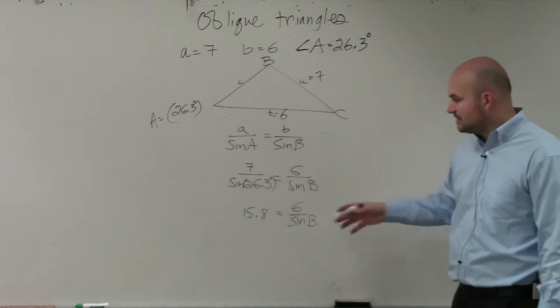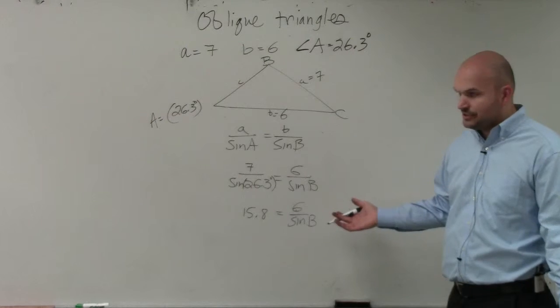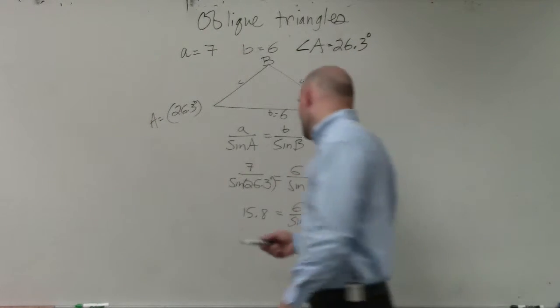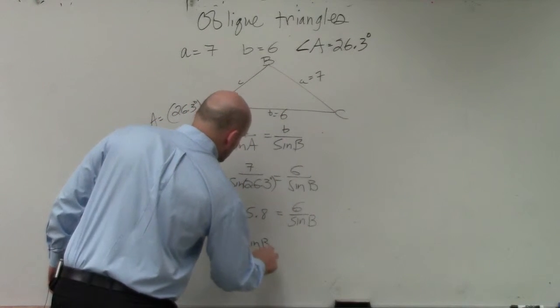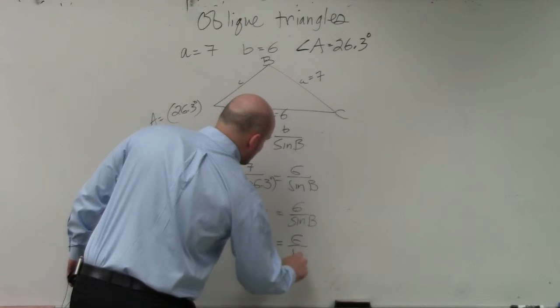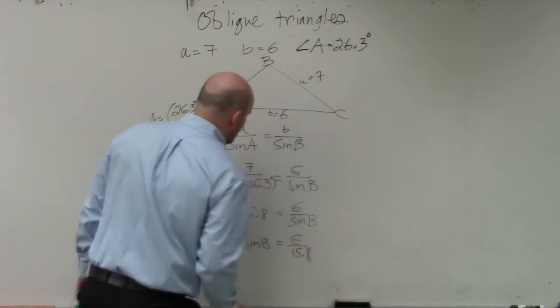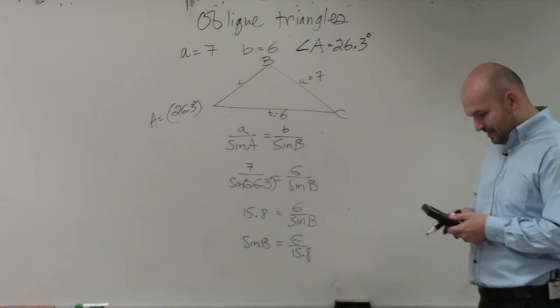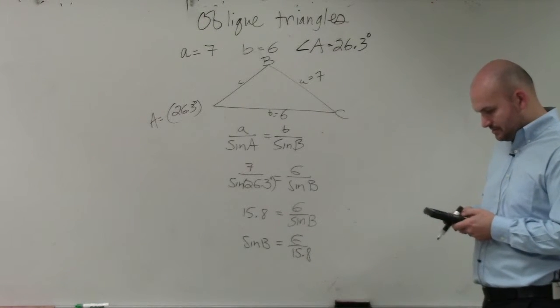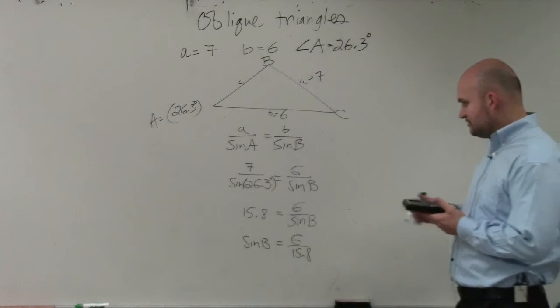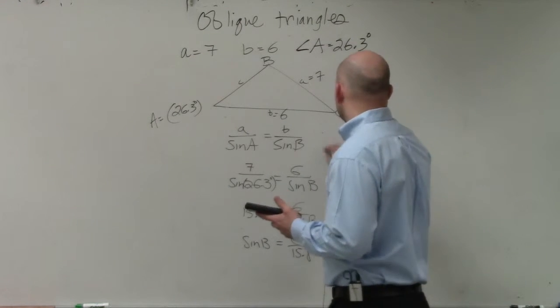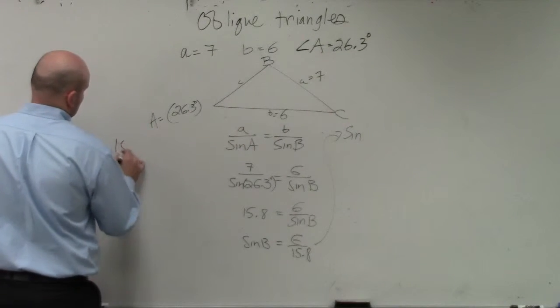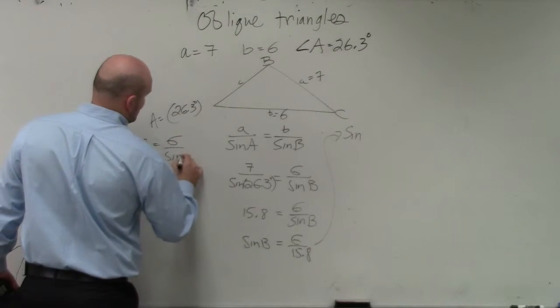Now hopefully you guys are familiar with solving in this case. You could use cross multiplication and solve. But hopefully by this point, since we've been doing problems that are similar to this, you guys would see that when solving for sine of B, I have 6 divided by 15.8. I'm just trying to do the work a little bit quicker.